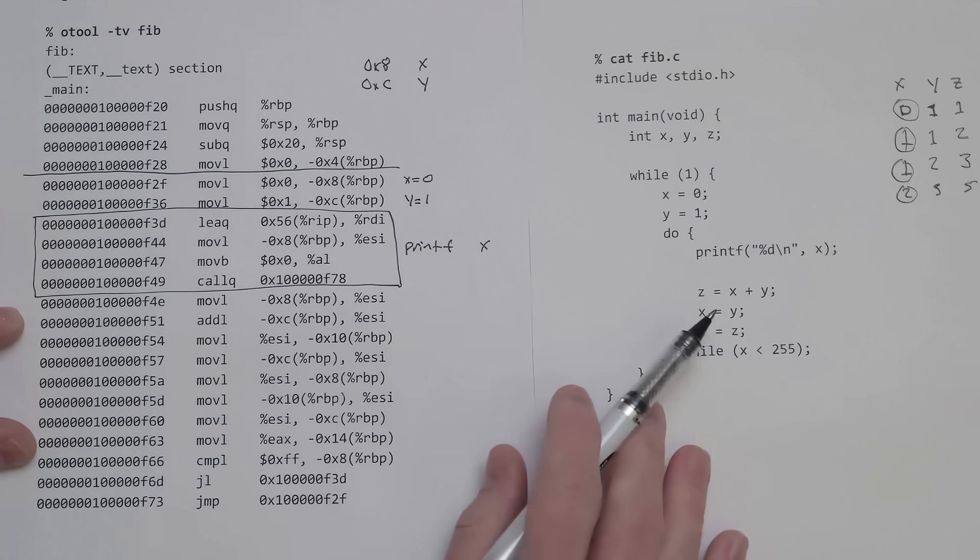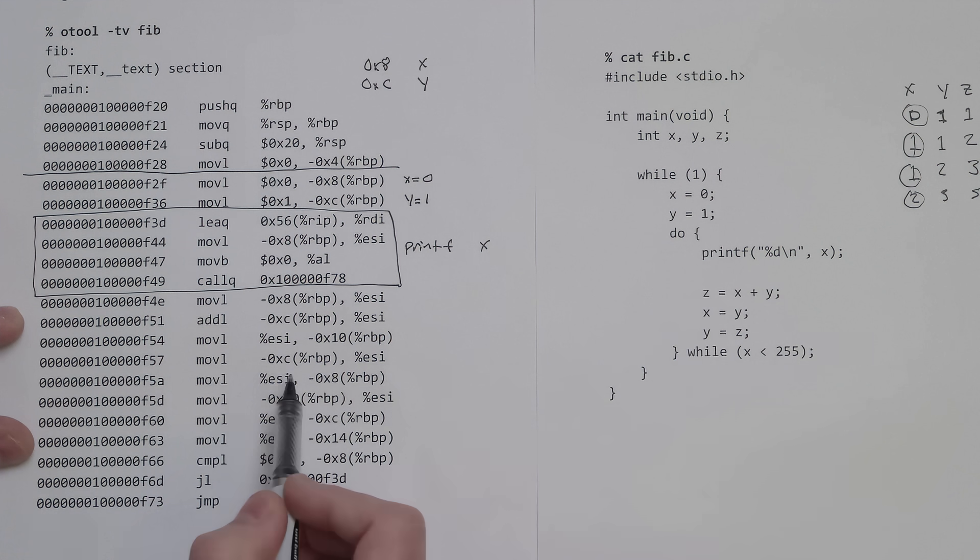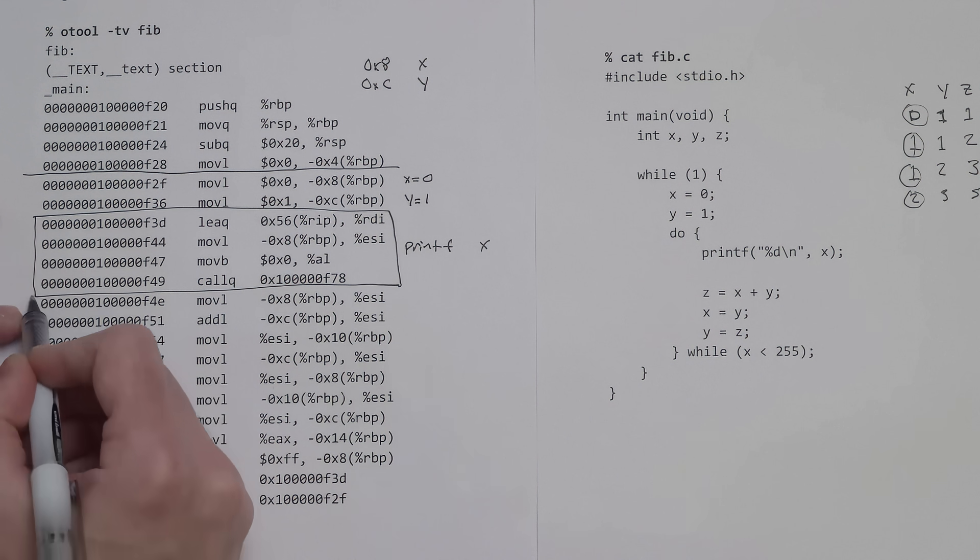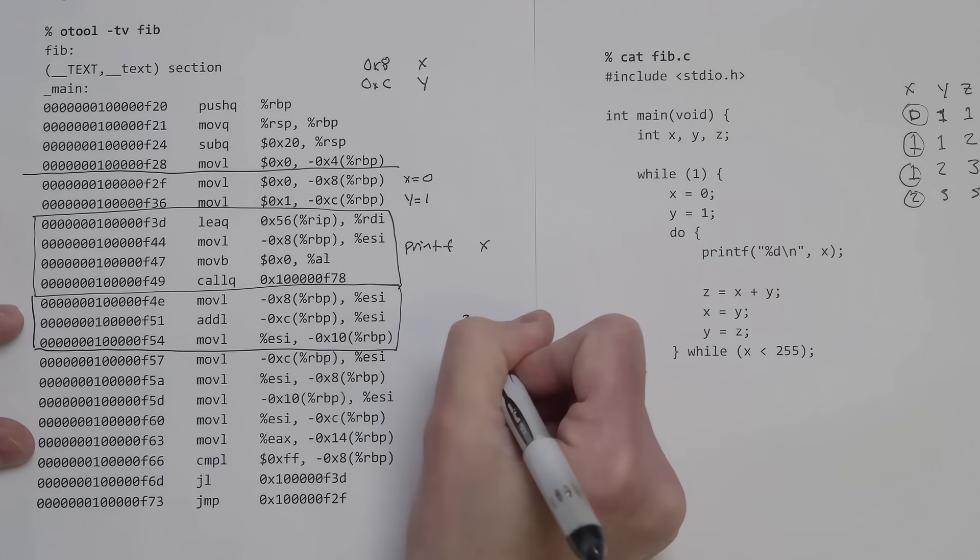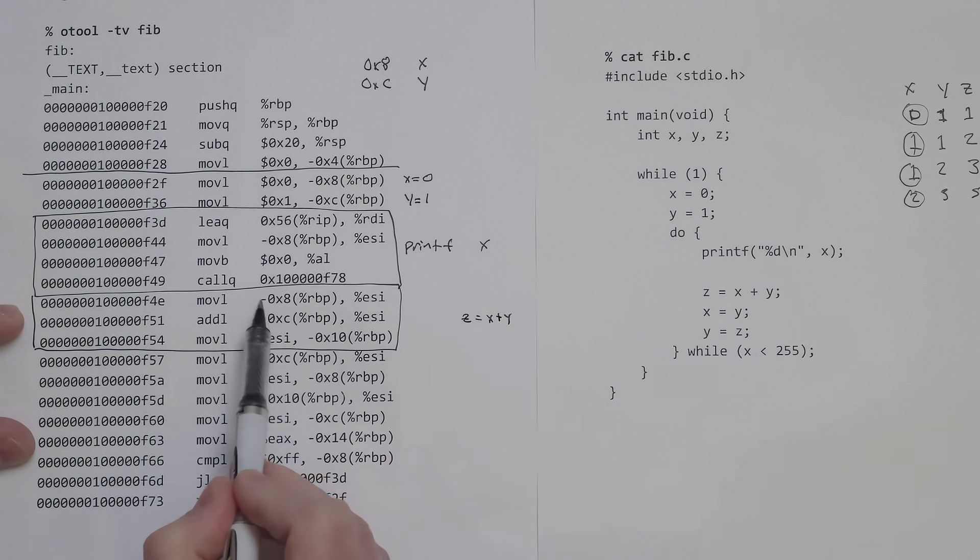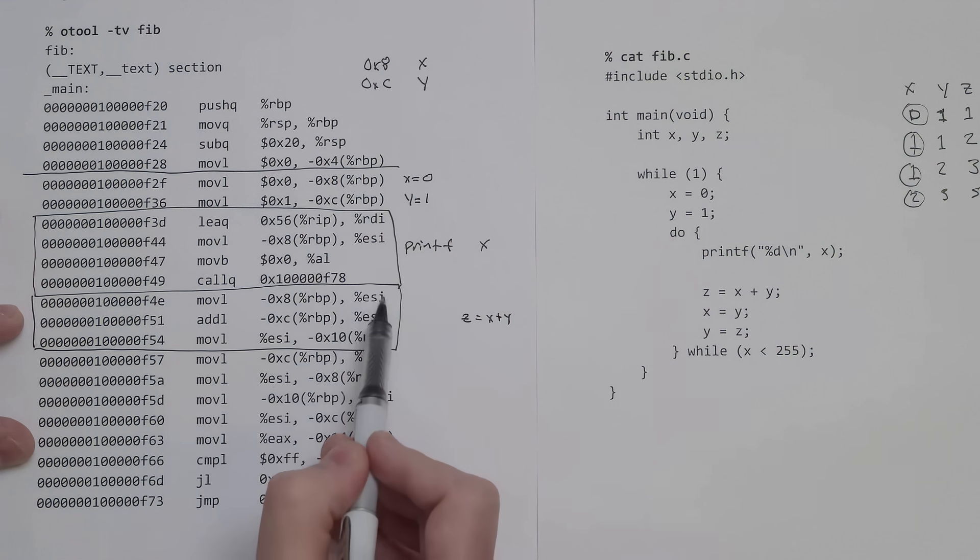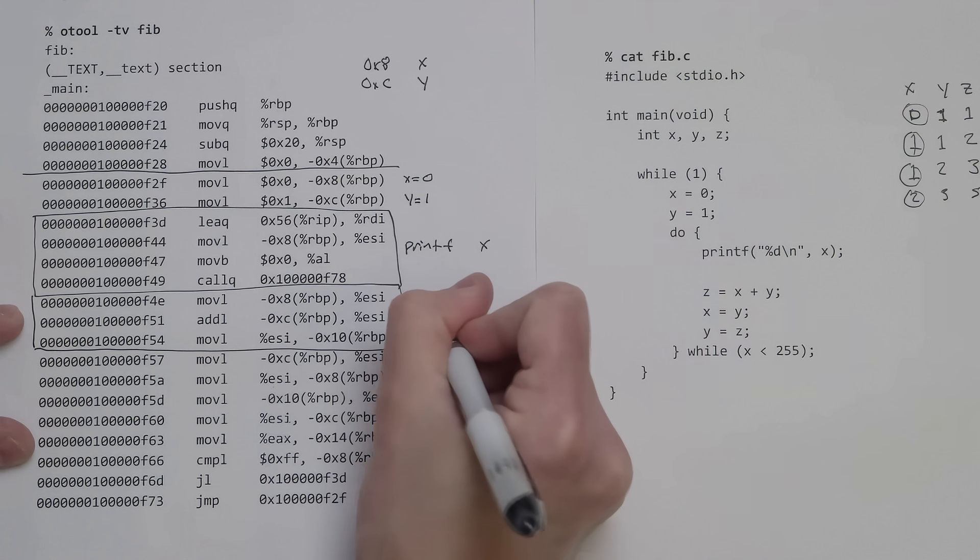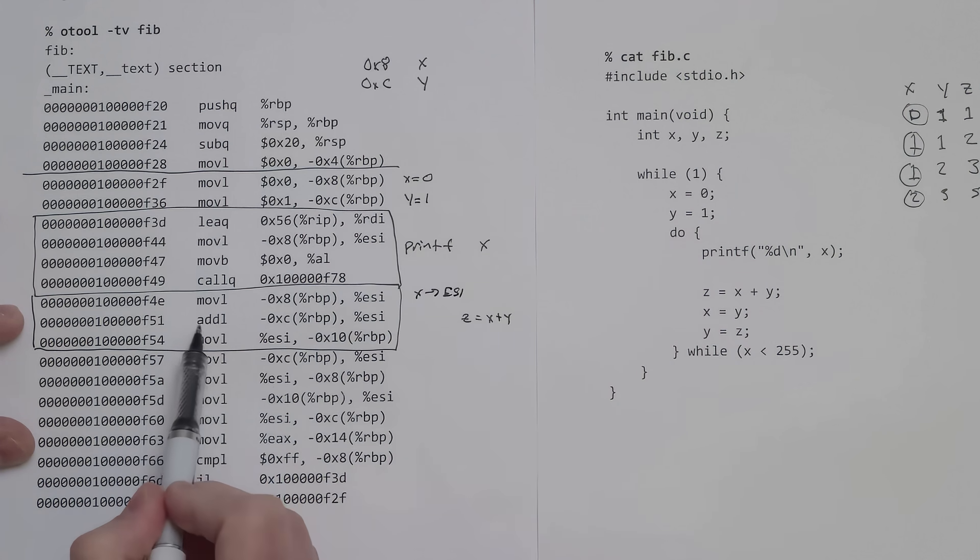After the printf, we have z equals x plus y. That is actually these three lines here. The way this works is we're moving 0x8, which is x, into this ESI register.